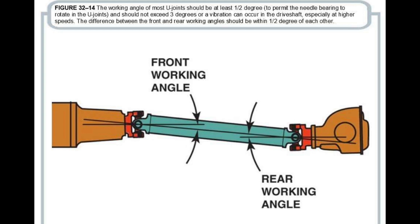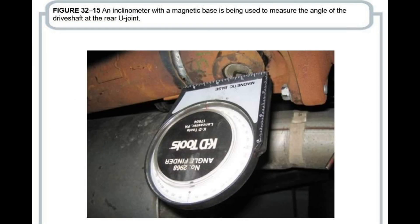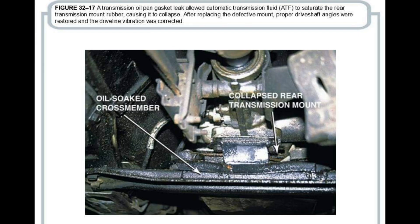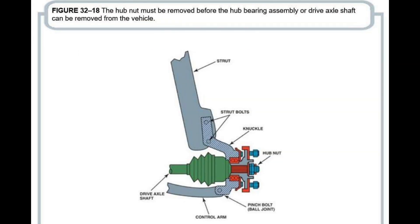Axle: An axle is a central shaft that connects and rotates the wheels of a vehicle. It serves as support for the vehicle weight and provides a mounting point for the wheels. In many vehicles, the axle also houses the differential, which distributes power from the drive shaft to the wheels.